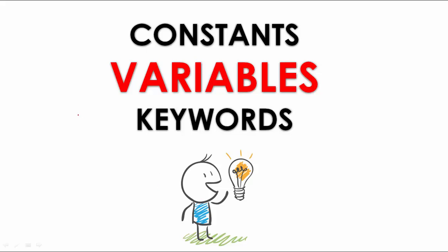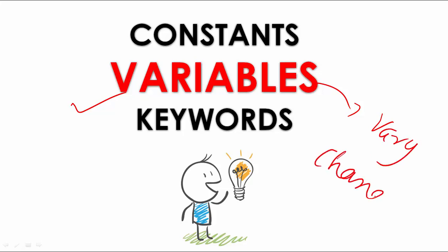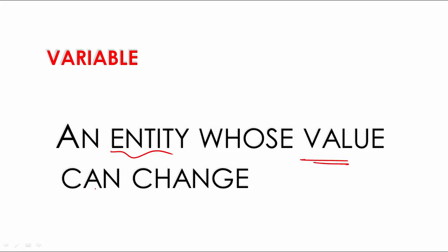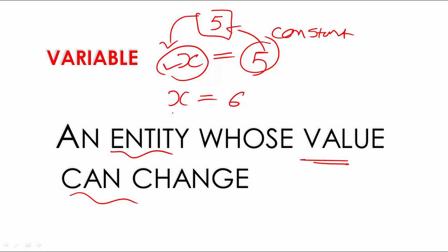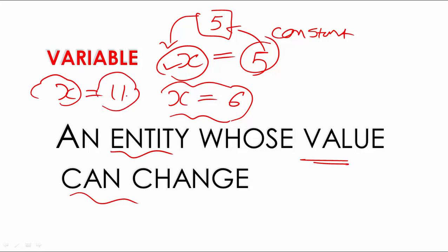Next, what are variables? As the name suggests, a variable is something which can vary or change — it is an entity whose value can change. For example, if I write x = 5, this 5 is stored in memory and I give the name x to that memory location. If I then write x = 6, x is now 6. Then x = 11, x has a new value; the old value 6 is erased. So x is a variable because its value can change. Note that 5, 6, and 11 are constants.